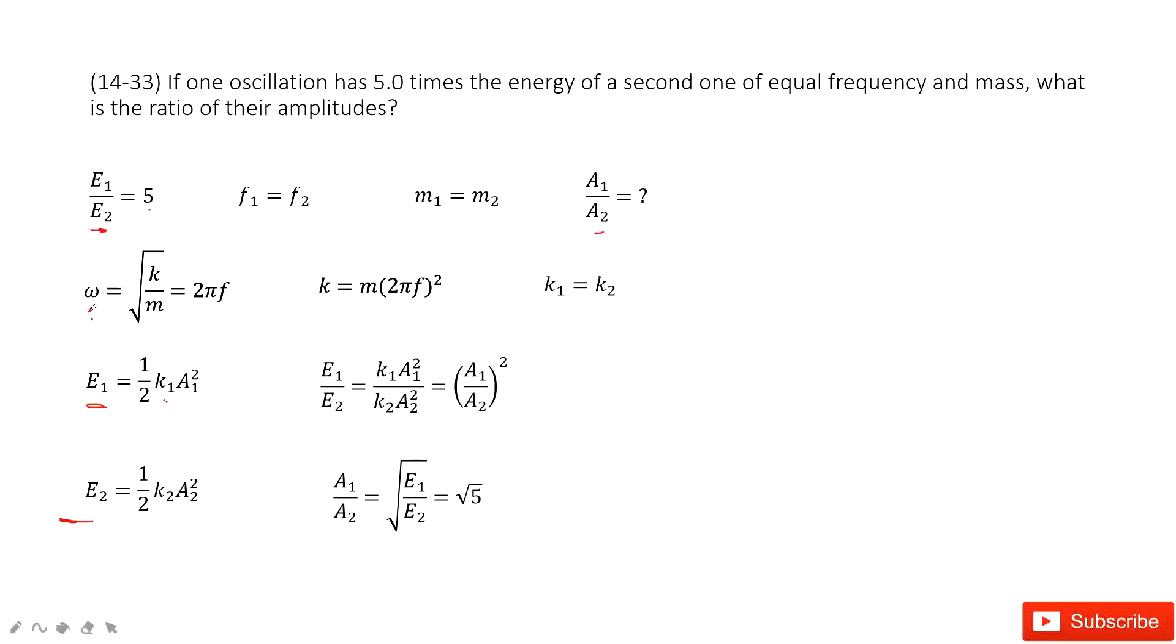The angular velocity for simple harmonic oscillations is omega equals square root of k over m, which equals 2 pi f. From this equation, we can solve for k: k equals m times 2 pi f squared.